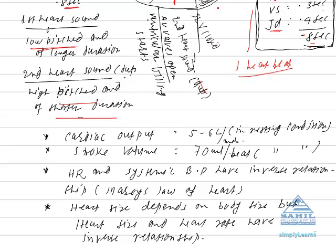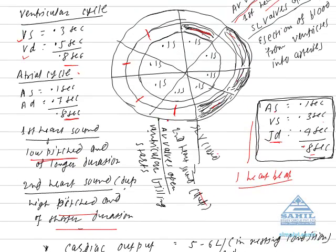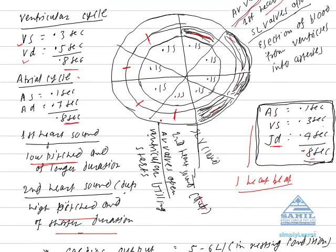After completion of ventricular systole, ventricular diastole starts. From this point we can see this is the diastolic phase of the atria, this is also the diastolic phase of the ventricle.